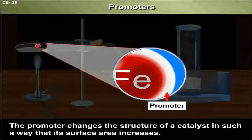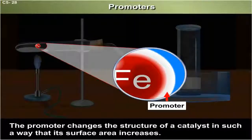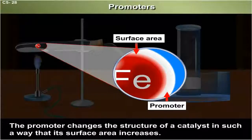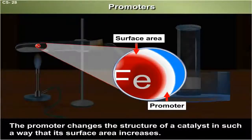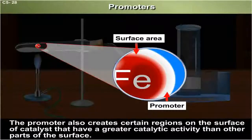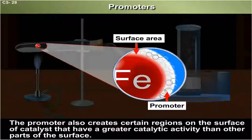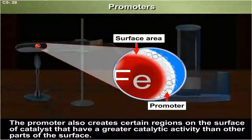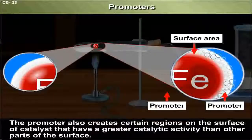The promoter changes the structure of a catalyst in such a way that its surface area increases. The promoter also creates certain regions on the surface of the catalyst that have a greater catalytic activity than other parts of the surface.